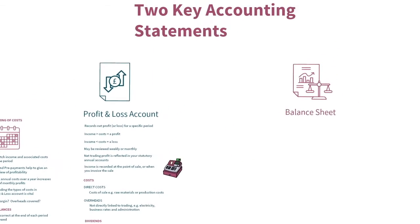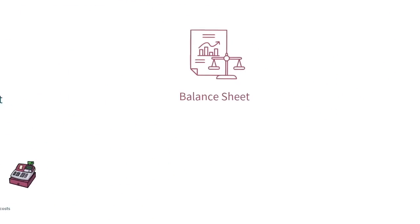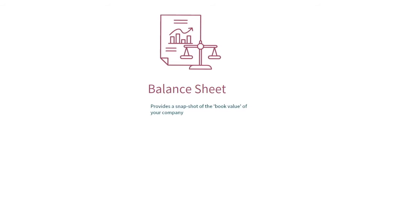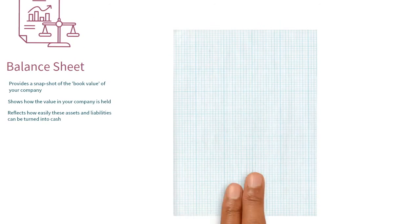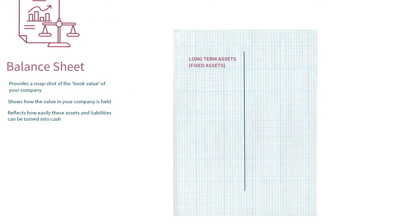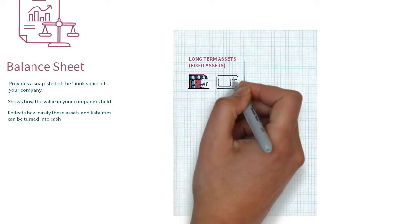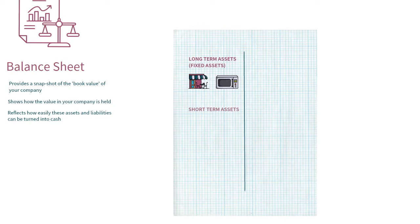The balance sheet records the book net worth of your company at any point in time, giving a snapshot of the value of your company. We acknowledge this is definitely just the book value, and true value may not always be reflected accurately here. At any point in time, the different categories on a balance sheet show how the value in your company is held, split into separate groupings depending on how easily those assets or liabilities can be changed to cash. Long-term assets, including buildings or equipment, are often called fixed assets and can't necessarily be turned into cash quickly. Short-term assets include items like cash, trade debtors — i.e. amounts owed to you by customers — and stock of raw materials or finished goods.